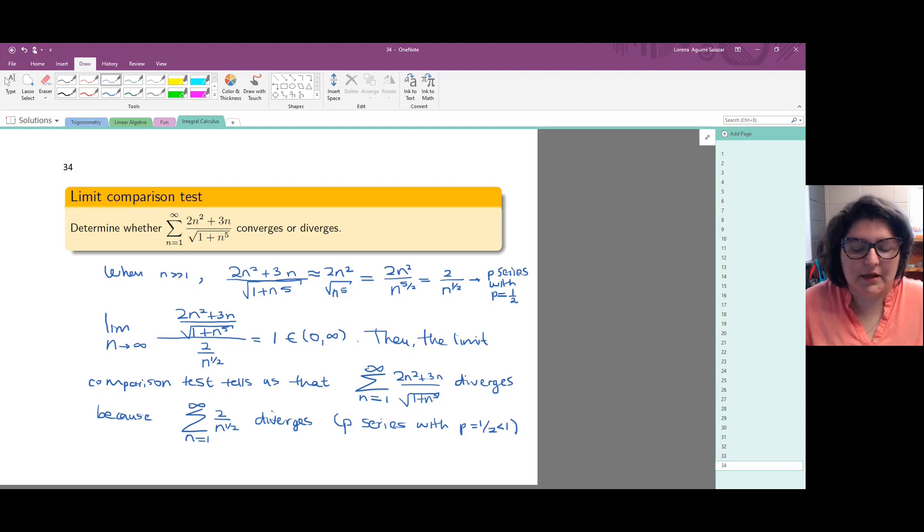The limit comparison test tells us that if our nth term is positive and behaves roughly like a term that gives a series that is divergent, then we get something divergent. And that if our nth term is positive and roughly behaves like something that is positive and gives a convergent series, then our series converges.